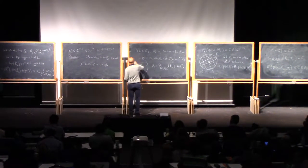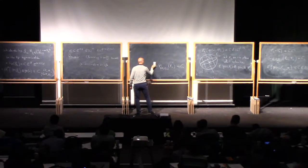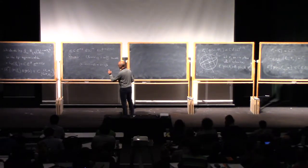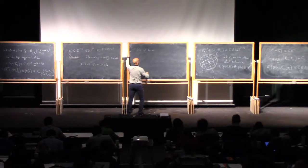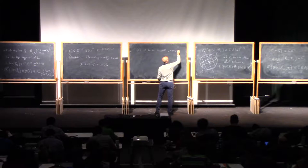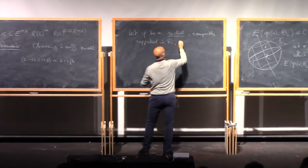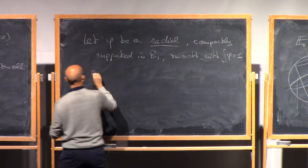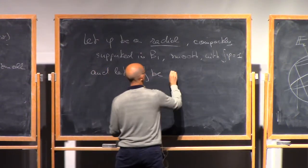So next, we have the function F_L. We actually smooth it by convolution with a convolution kernel of the size of the cube L. Let φ be a radial, compactly supported smooth function, supported in the ball of radius 1, with integral equal to 1. Let φ_L be the corresponding family of mollifiers.